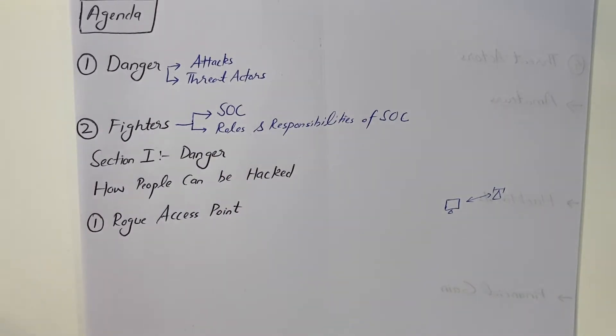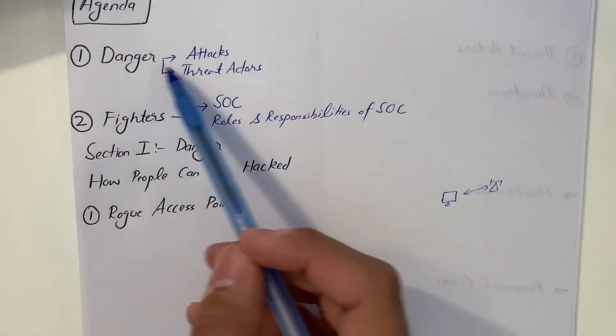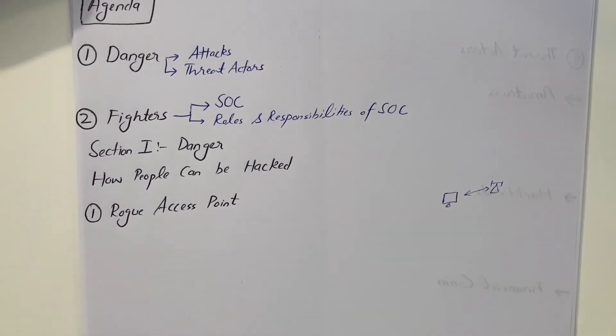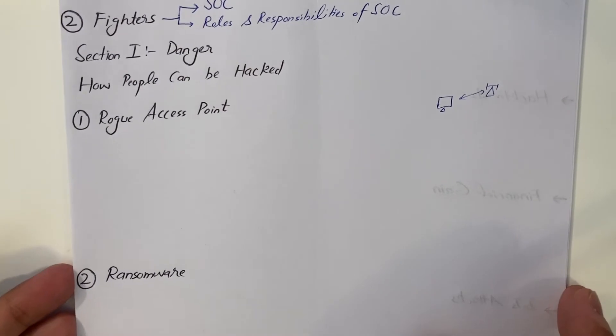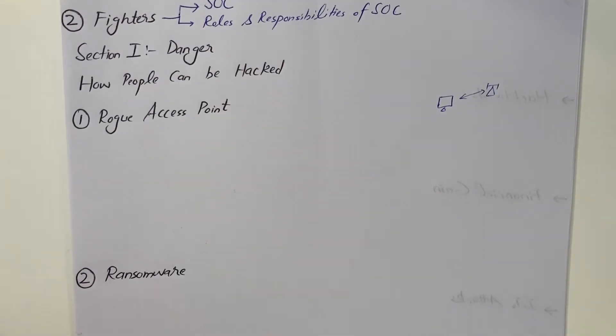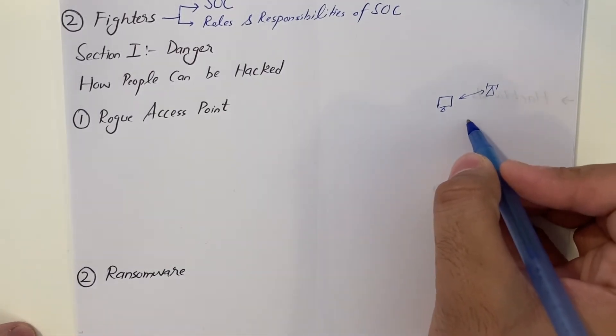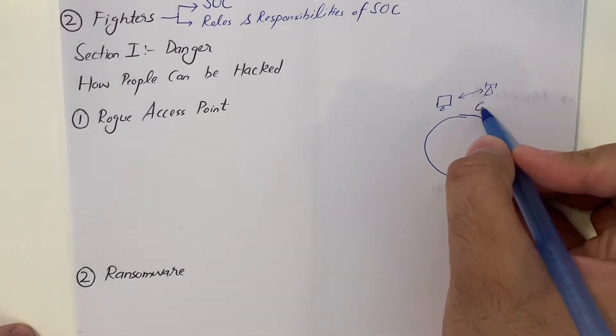Cyber Security Operations Center, SOC, is basically the frontliner who actually helps us out to protect our IT assets. Let's start with the first agenda item. First is how people can be hacked. Number one is the rogue access point. Rogue access point is very common nowadays. Let me just make you understand what is a rogue access point.